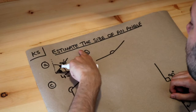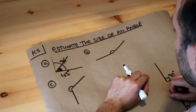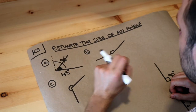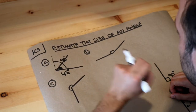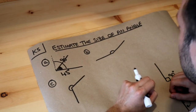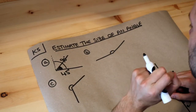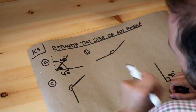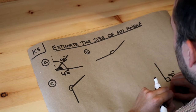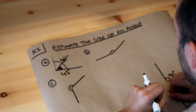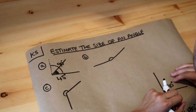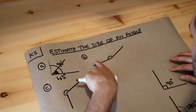By the way, when we say estimate the angle, we're not measuring it using a protractor. We're just trying to guesstimate what the angle is — give some kind of approximate measure.